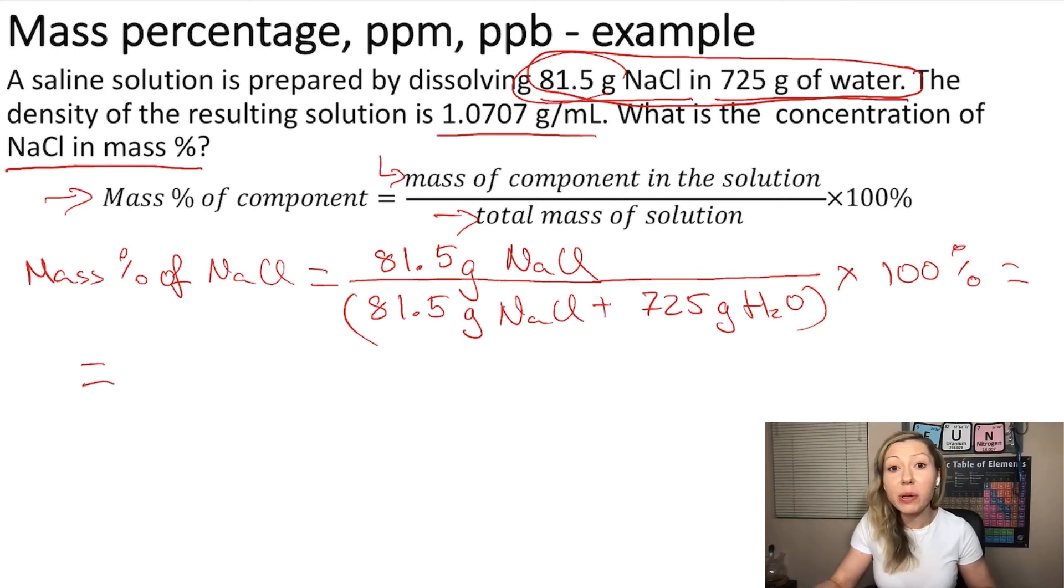So the grams will cancel out and our final unit is going to be percentage. And if you do this calculation, you are going to get 10.1 percent.